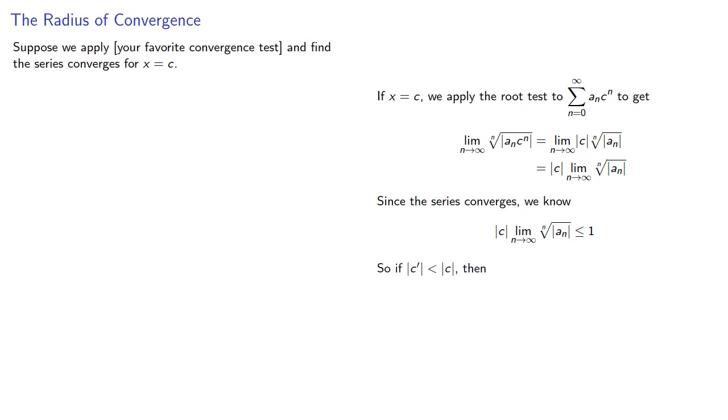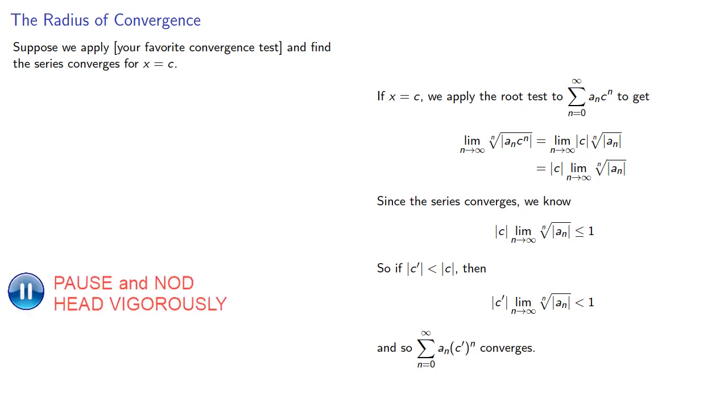So, if we take c prime whose absolute value is smaller than the absolute value of c, then this limit will be definitely less than 1. And so our new series will definitely converge. So, if the absolute value of c prime is less than the absolute value of c, then our series will also converge.